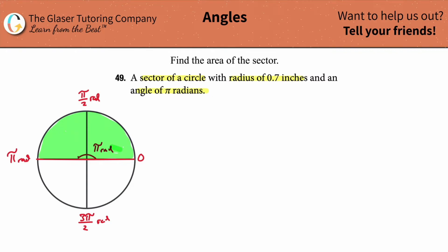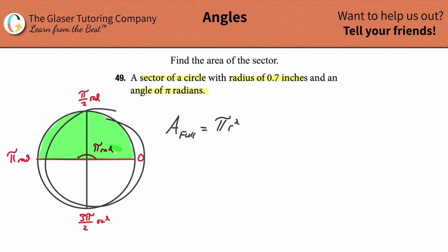How do we find this area? You might already be saying: I know the area of a full circle — that's just pi r squared. If I find the area of the full circle and divide it by two to find half, that would work perfectly.